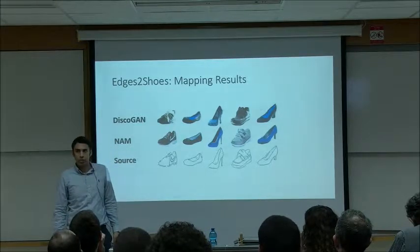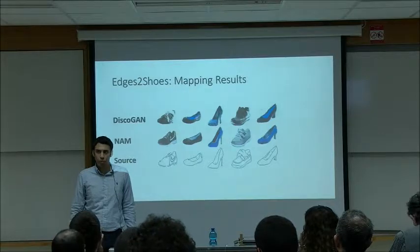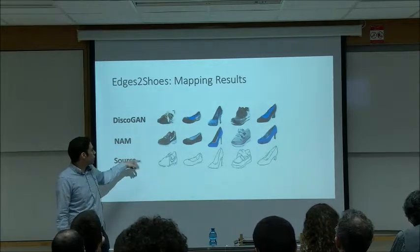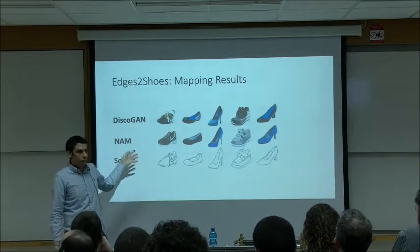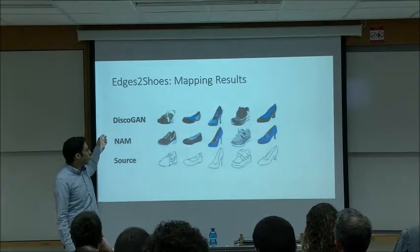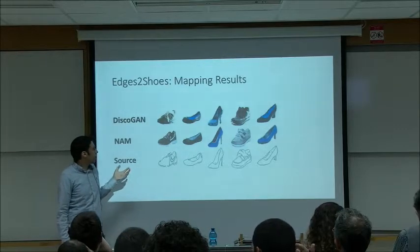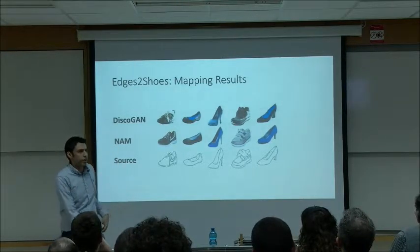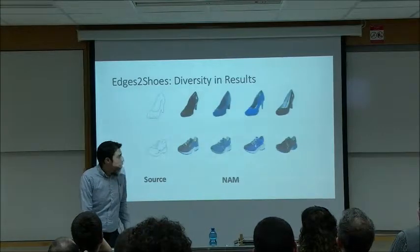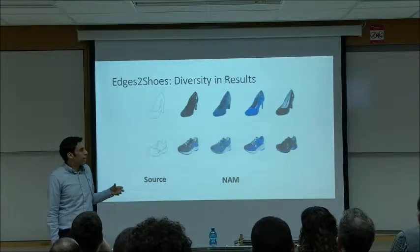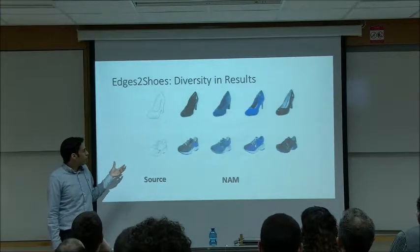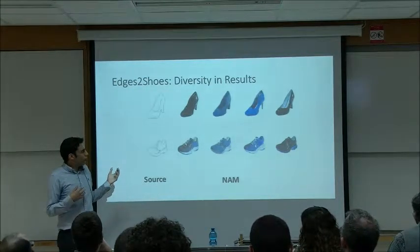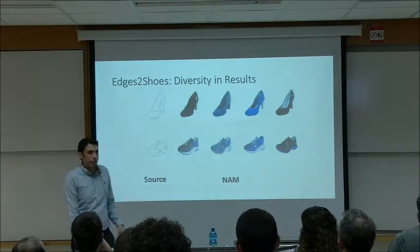Looking at qualitative results on the task of mapping edge maps of shoes to photorealistic shoes — completely unsupervised — NAM produces analogies of both higher quality and higher fidelity than DiscoGAN, the competing approach at this resolution. NAM is also able to give multiple analogies for the same input image, showing quite a lot of diversity among the results, which is something DiscoGAN cannot do.